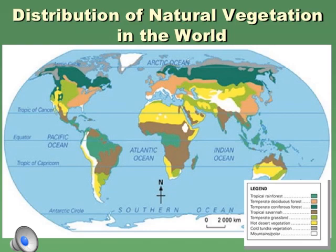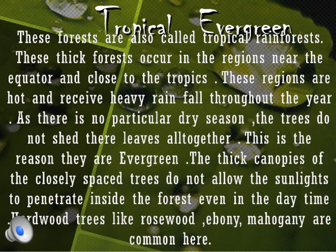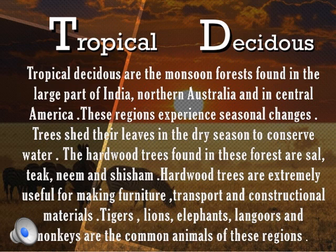Tropical evergreen forests are found very near to the equator, between the Tropic of Cancer and the Tropic of Capricorn. They are also called tropical rainforests. The climate here is hot and humid, with rainfall throughout the year. Sunlight does not penetrate down because the thick canopies are so closely spaced. The trees found here are rose, ebony, and mahogany.